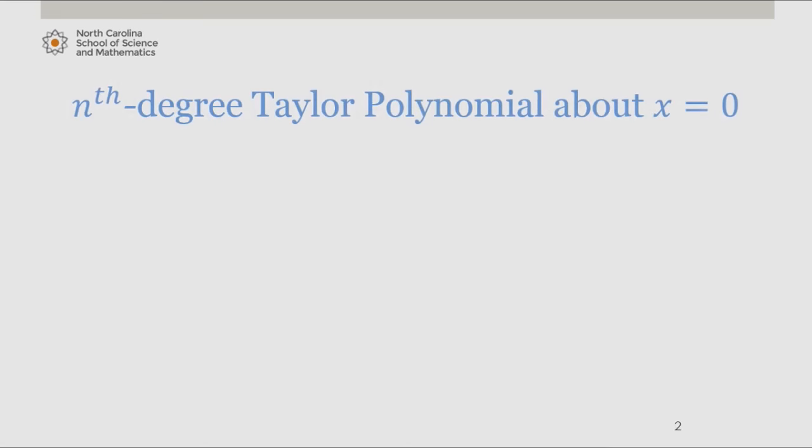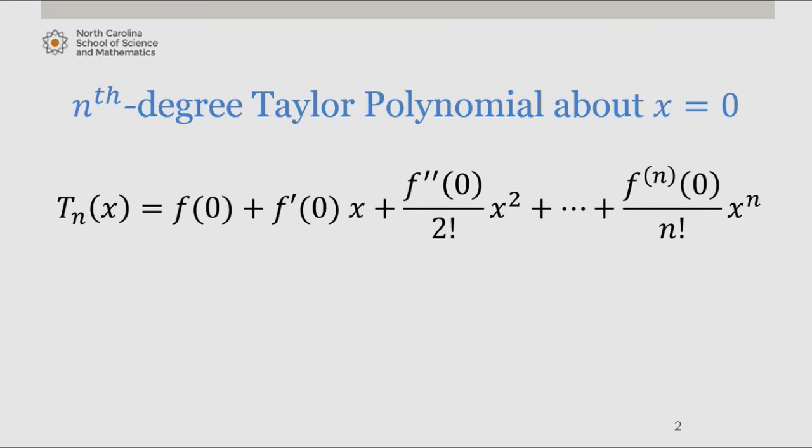Now recalling the general form of an nth degree Taylor polynomial about x equals 0, in order to generate this polynomial, we need to find derivatives of the function of interest and evaluate them at the point of interest.